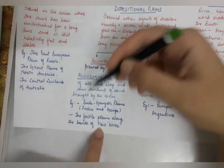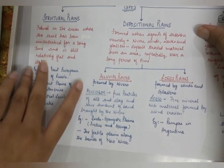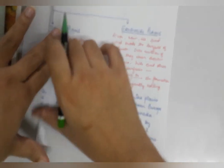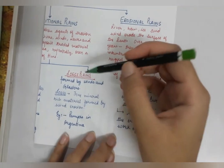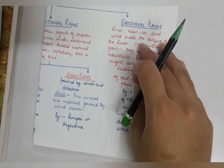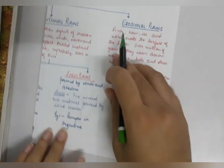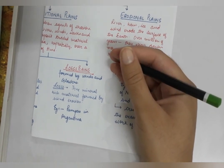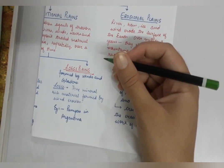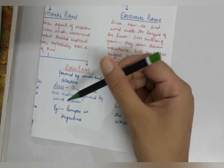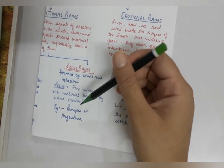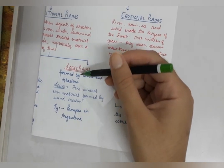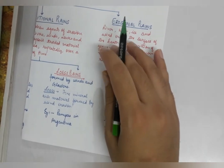Another example of alluvial plains is the fertile plains along the banks of the Nile River. Loess plains are formed by the action of wind and glaciers, not rivers. Loess is the fine, rich material formed due to wind erosion. Such plains are present in Argentina and are known as the Pampas. The Pampas in Argentina are a type of loess plain under depositional plains.